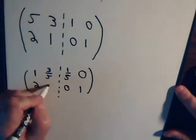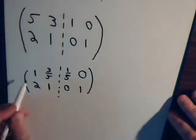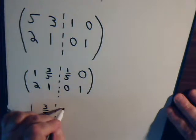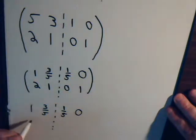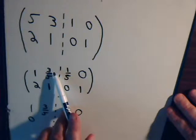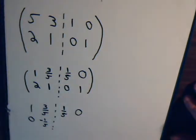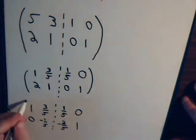Now we want to make this 0. So we imagine multiplying the first row by minus 2 and then adding it to the second row. So all these numbers stay unchanged. Minus 2 plus 2 is 0. That would be minus 6/5 plus 1 is minus 1/5. Minus 2/5 plus 0, that's minus 2/5. Minus 2 times 0 is 0 plus 1, that stays 1. So we have this.